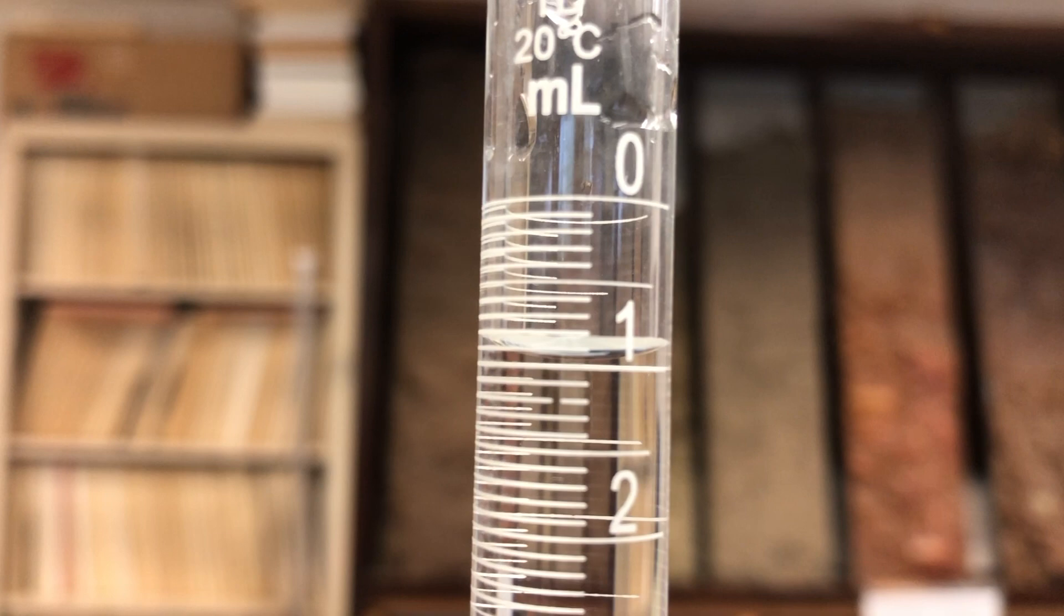Before beginning the procedure, remember that a burette reads backwards with 0 at the top and 50 milliliters at the bottom. It is important to record both the initial and final readings to accurately quantify how many milliliters were dispensed.